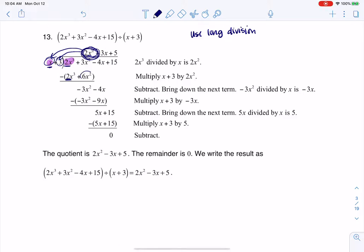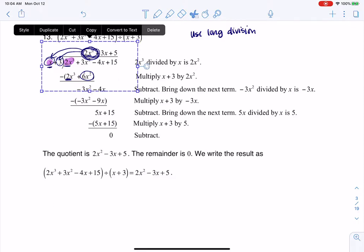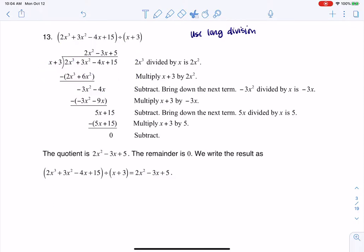2x squared times 3 gets me 6x squared. Now I'm going to erase most of this because it gets a little crowded. So I've multiplied that out, and then I have to remember to subtract those terms. So 2x cubed minus 2x cubed, that goes away. That was by design.